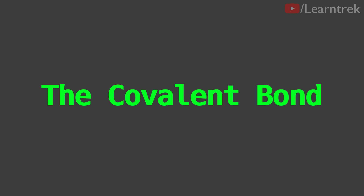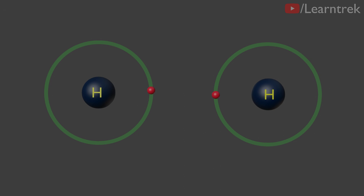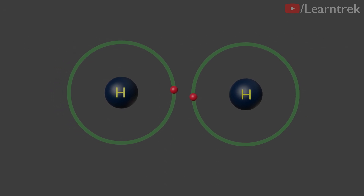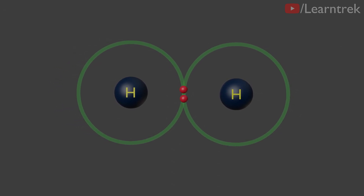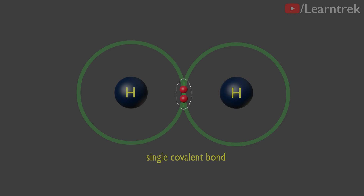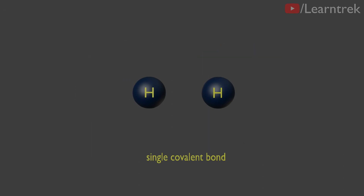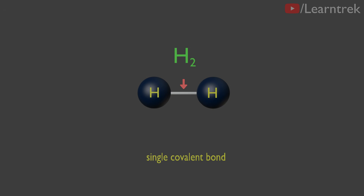Let's move on to the next topic: the covalent bond. Bonds which are formed by equal sharing of electrons between two atoms are known as covalent bonds. If a single pair of electrons, or two electrons, are shared between two atoms, it is called a single covalent bond, also represented by a line between the two atoms. For example, the hydrogen H2 molecule has a single covalent bond between its two hydrogen atoms.